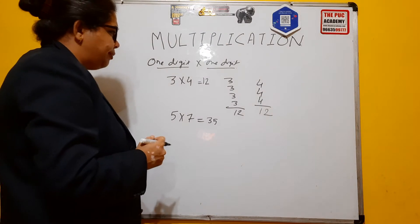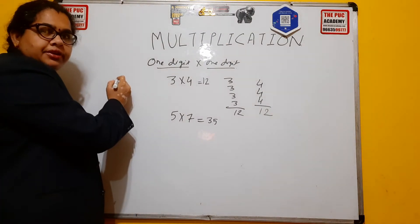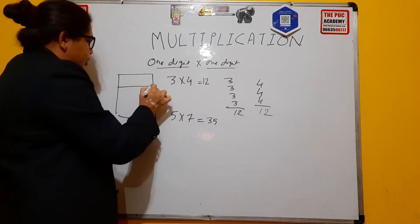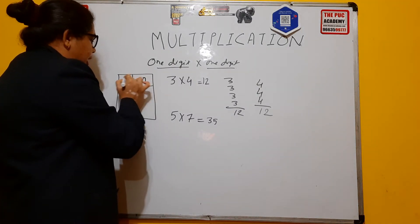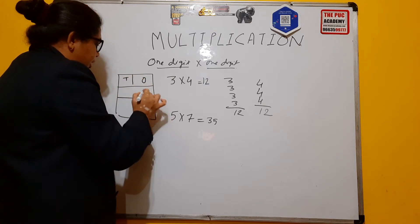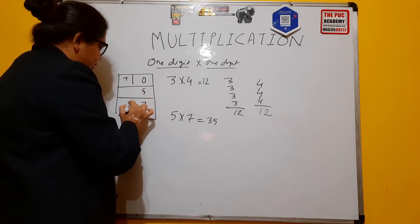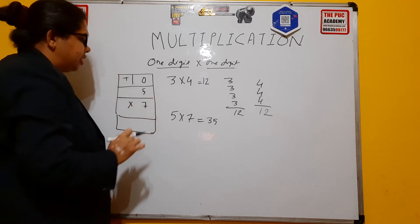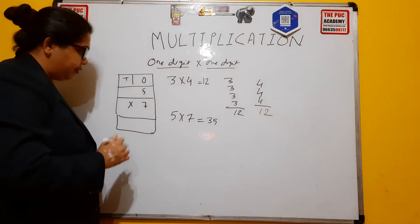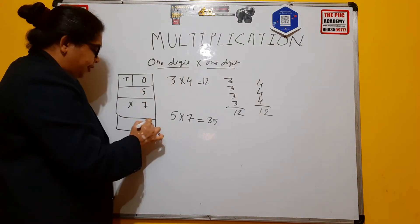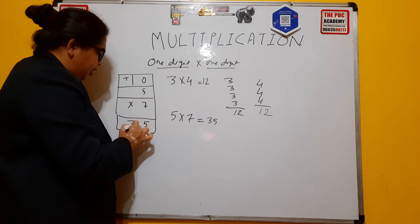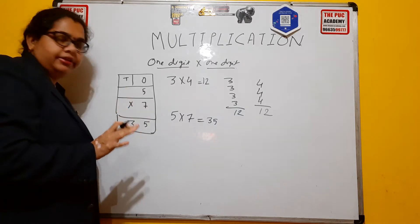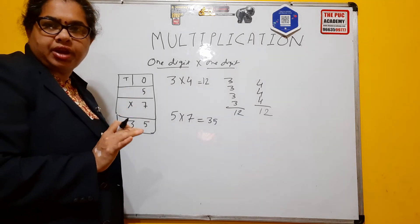This is a very simple method. If you want to write it in a box method, make a box for the ones and tens place, then write 5 and 7 and make a cross. 5 times 7 gives 35 — the 5 comes at the ones position and the 3 comes at the tens position. So that is 35.